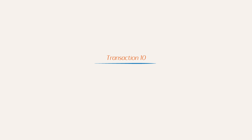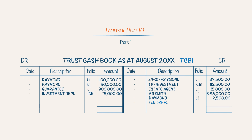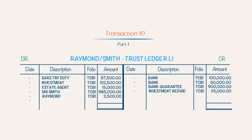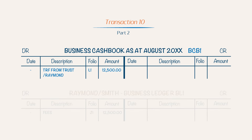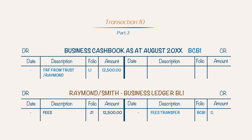Transaction 10: You transfer your fee from your trust account to your business account. This transaction is recorded in two parts. Part 1: You credit the trust cash book with R12,500 and debit the trust ledger with R12,500. Part 2: You debit the business cash book with R12,500 as the funds are received, and credit the client account with R12,500 as it has been paid. Now you have completed the exercise.